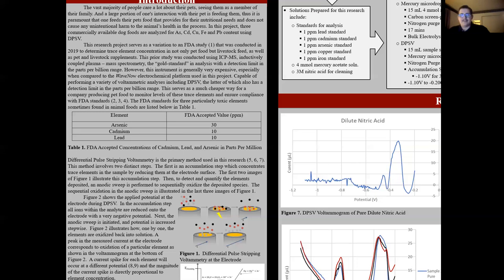The FDA standards can be found below in table one. For arsenic, we have an FDA accepted value or maximum tolerable level of 30 parts per million. For cadmium, that would be 10 parts per million, and for lead, that would also be 10 parts per million.